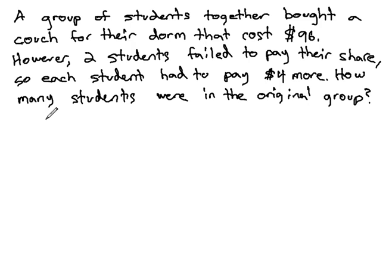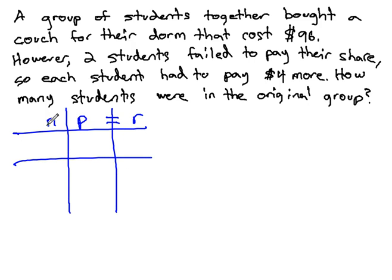Again, we're talking about revenue, or how much money is exchanging hands, and so we consider the number of people involved times the price per person equals the total revenue exchanged. If we set this up in our table, in the original deal, we don't know the number of students or the price each agreed to pay, but we do know the amount of revenue that was agreed to be exchanged. The price of this couch is going to be $96.